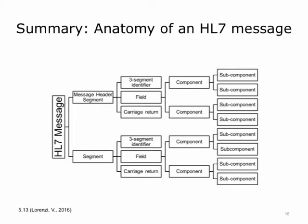In summary, an HL7 message is made up of segments — a segment is a group of related fields. Each segment begins with a three-character segment identifier and ends with a carriage return. The very first segment of every message is the MSH segment. The fields in a segment can sometimes be further broken down into components and subcomponents. Field components and subcomponents are strung together in a linear fashion with delimiters such as a vertical bar, tilde, circumflex, and ampersand, which separate the fields, components, subcomponents, or repetitions.